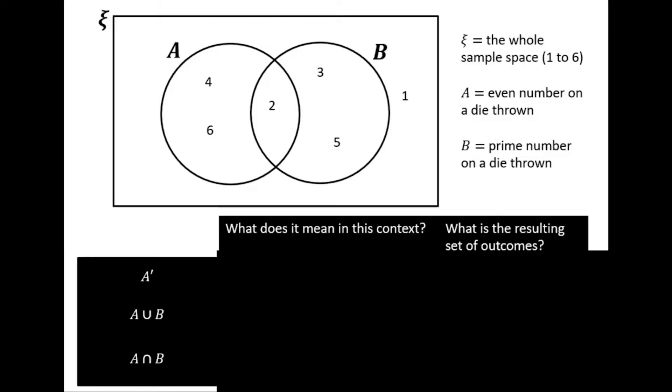So looking at this Venn diagram here, we have two sets. A is even numbers when a die is thrown, and B is prime numbers when a die is thrown. So let's just check that we know the complement of A, A dash, not A. Which numbers does it represent in this context?